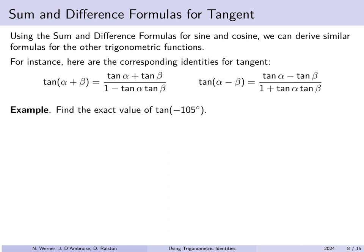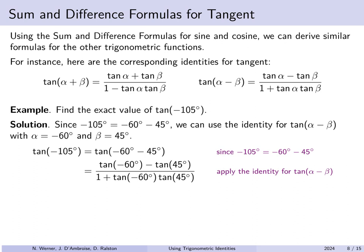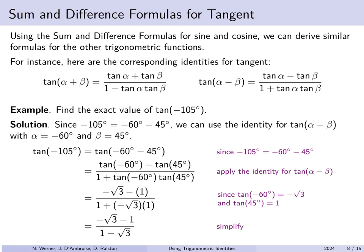Let's use these to find the exact value of the tangent of minus 105 degrees. We can write minus 105 degrees as negative 60 degrees minus 45 degrees. Setting alpha to minus 60 degrees and beta to 45 degrees and applying the tangent difference formula, we get: tangent of minus 60 degrees minus tangent of 45 degrees, all over 1 plus tangent of minus 60 times tangent of 45. Substituting the known values and simplifying gives us an exact value for the tangent of minus 105 degrees.